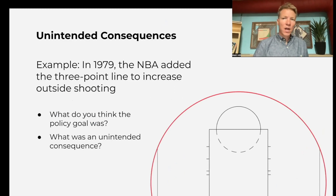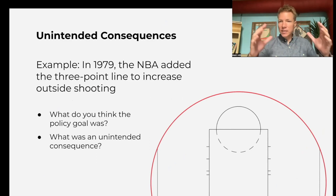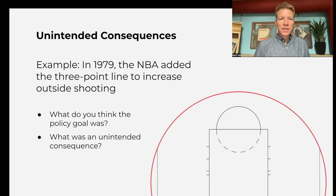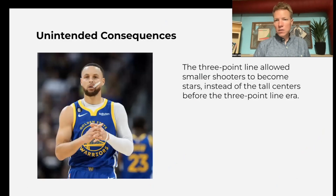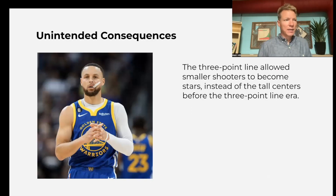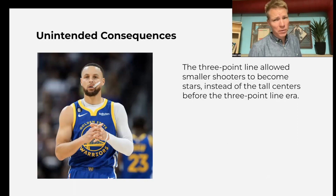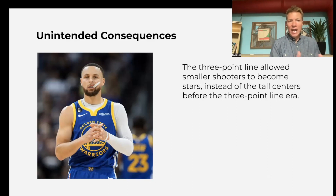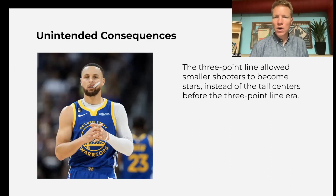The example we have here is NBA basketball adding a three-point line to increase outside shooting. That was the intent — to get more outside shooting and open the game up. That was the result, but there is an unintended consequence: before the three-point line, all your star players in the NBA are big guys — Wilt Chamberlain, Kareem, Bill Russell, George Mikan. After the three-point line, shorter players can become superstars like Steph Curry.